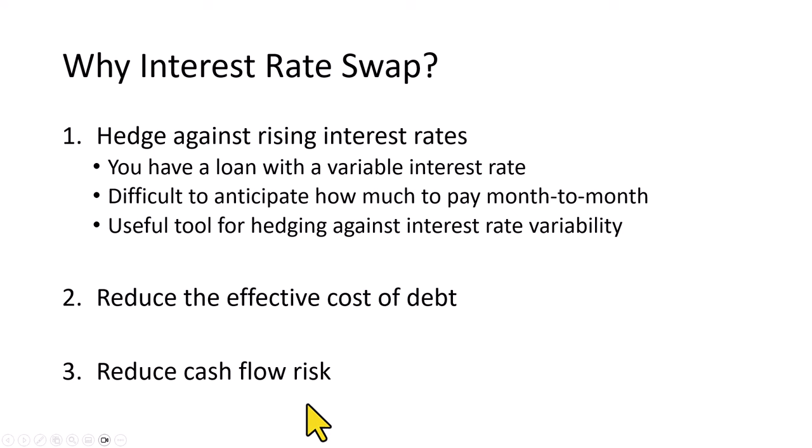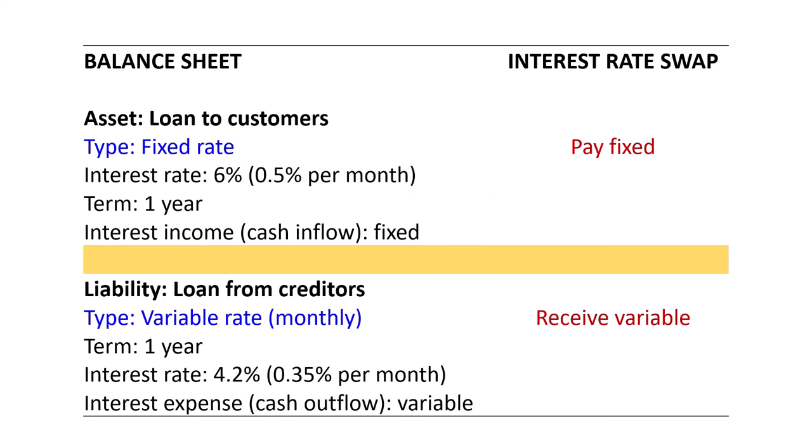This type of swap would allow you to match the variability of your interest payments, which are cash outflows, with the variability of your interest income, which are cash inflows. Here's an example of how that might work.